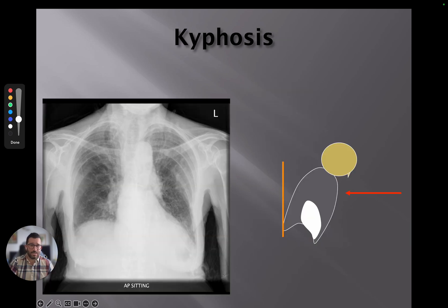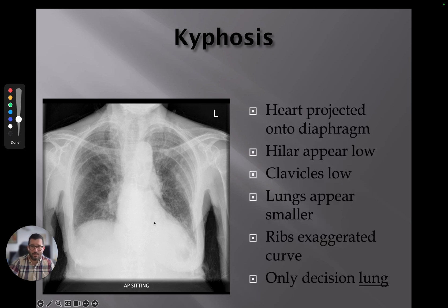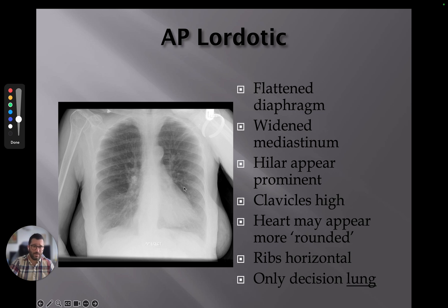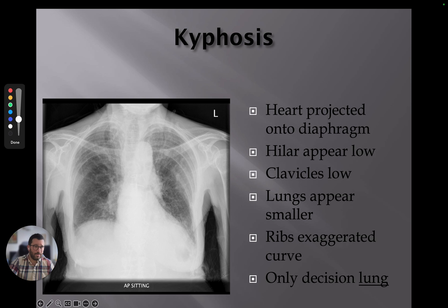Similarly, if the patient is kyphotic or slumped forward, the x-rays interact with the body and project onto the detector differently. The heart is now projected down onto the diaphragm, the hila appear low, and the clavicles come right down. The lungs can appear smaller due to the way the x-rays interact with the patient, and the ribs show an exaggerated curve — as opposed to the flattened appearance seen in standard positioning — because we're seeing that three-dimensional structure in a slightly different representation.